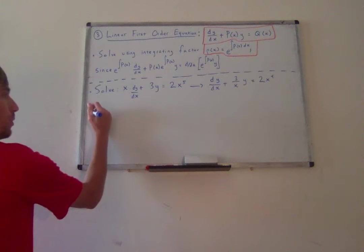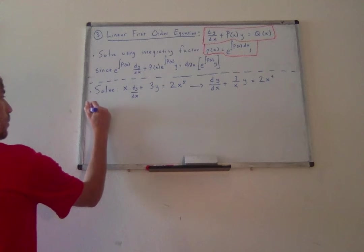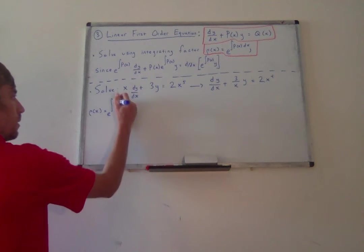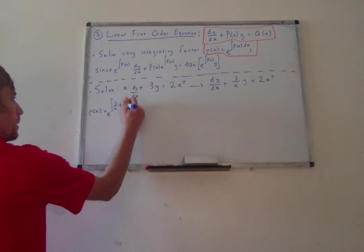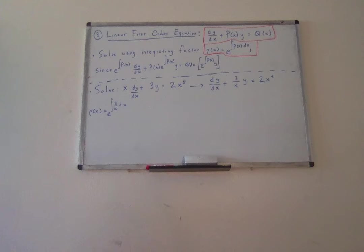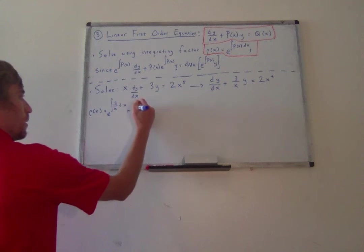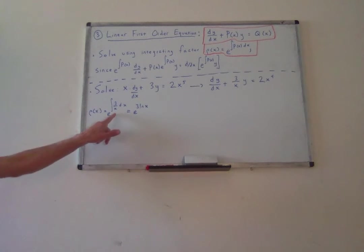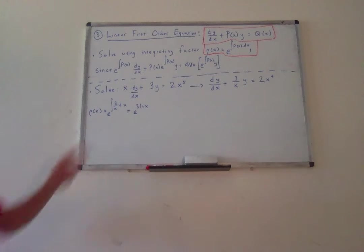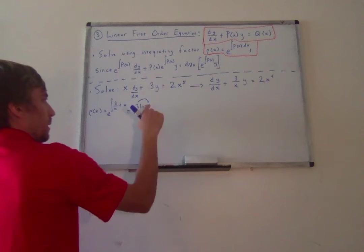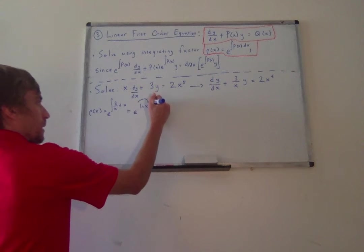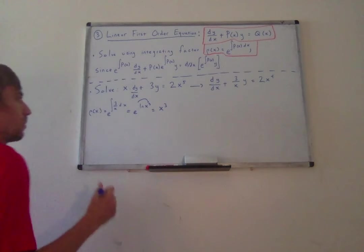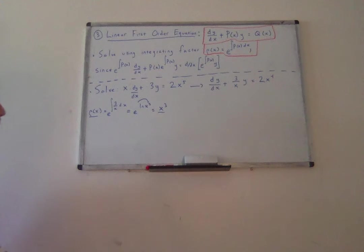All we're going to do is let ρ(x) equal e to the integral of 3 over x dx. That's equal to e to the 3 natural log of x. What I can now do is bring this 3 up into the power of x to make it ln(x) cubed. Then e and ln are inverses of each other, so ρ(x) is just equal to x cubed.